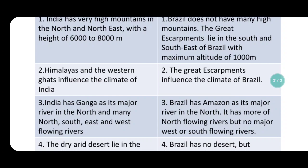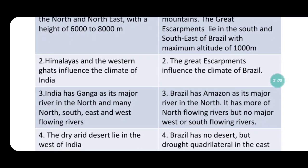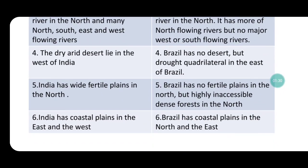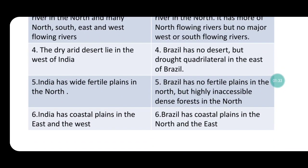India has the Ganga as its major river in the North and many North, South, East, and West flowing rivers. Brazil has the Amazon as its major river in the North; it has more North-flowing rivers but very few West and South flowing rivers. The dry, arid desert lies in the West of India, called the Rajasthan or Thar Desert or Marusthali. Brazil has no desert but has a drought quadrilateral in the East.